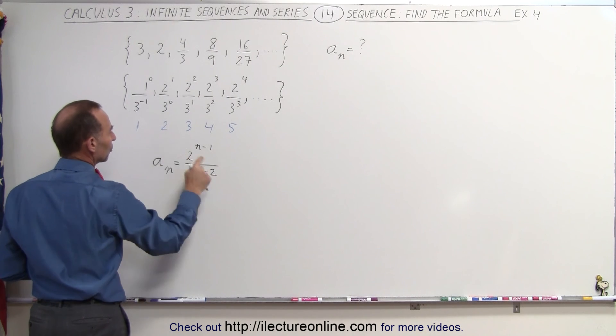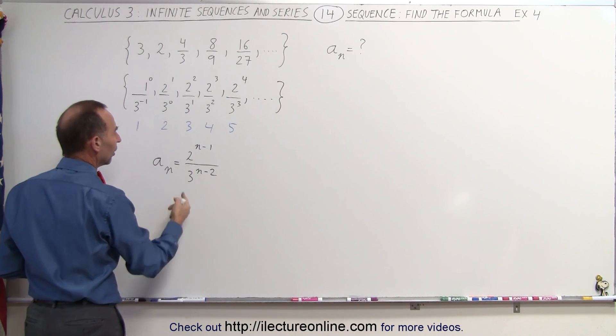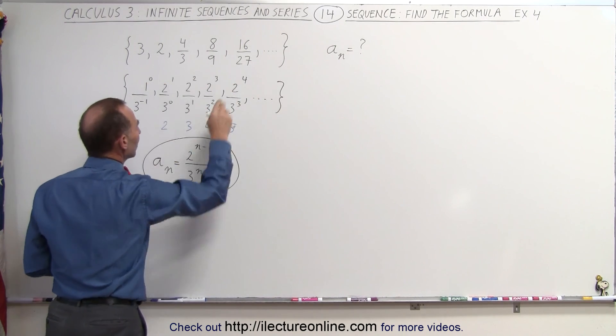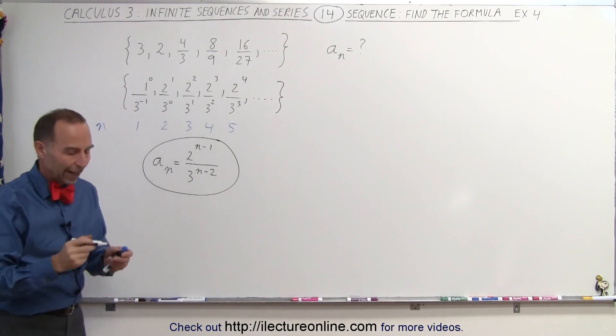When n is equal to 2, subtract 2, I get 0, and so forth. So it looks like this is a good way in which we can write the sequence in the general form like that.